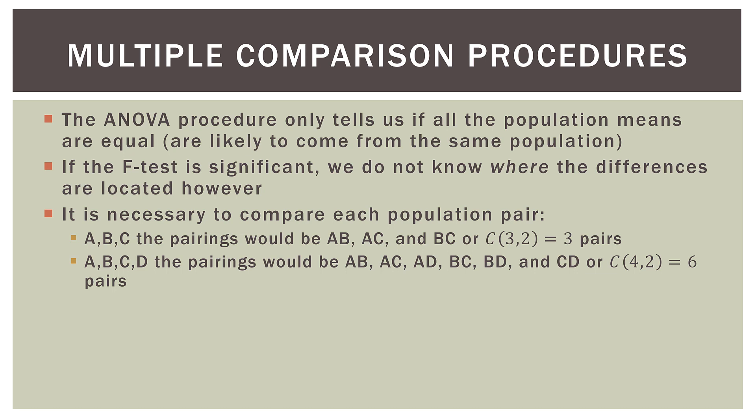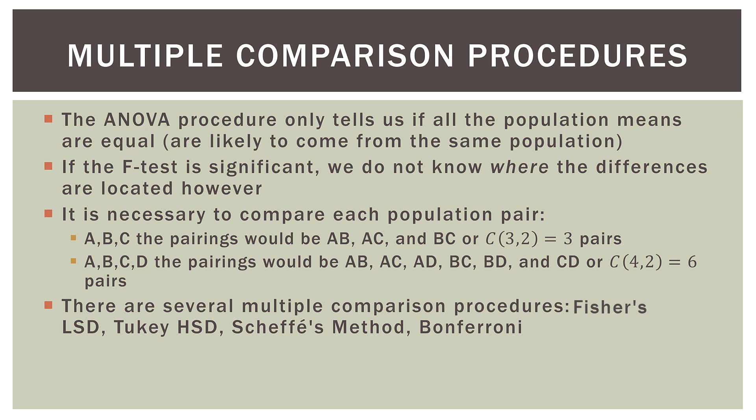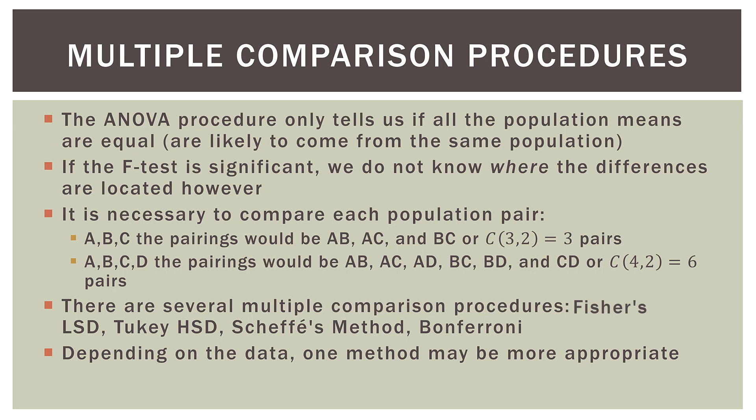If we have four groups A, B, C, D, the pairings would be AB, AC, AD, BC, BD, and CD — four-choose-two pairs, which is six. There are several multiple comparison post hoc procedures. In this video we will look at Fisher's LSD, but there's also the Tukey HSD, Scheffé's method, and Bonferroni. Depending on the data, one of these methods may be more appropriate, and they vary in terms of how conservative they are about detecting differences among each group. But in the grand scheme of things, they all essentially do the same thing. This video will focus on the Fisher's LSD test.